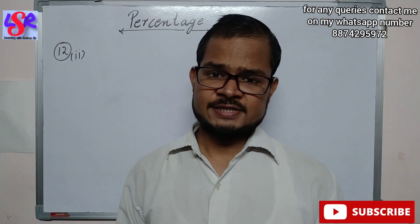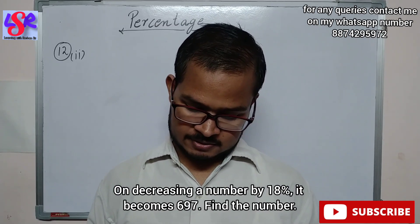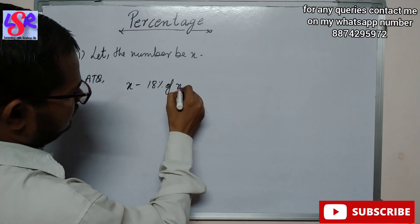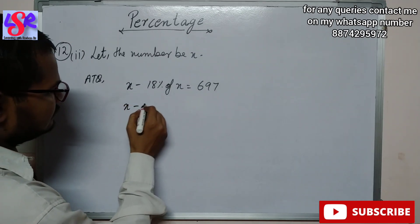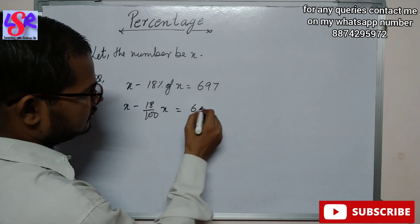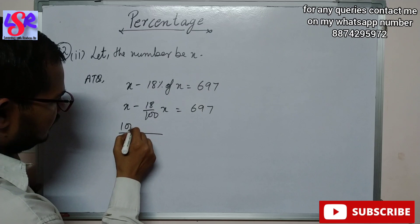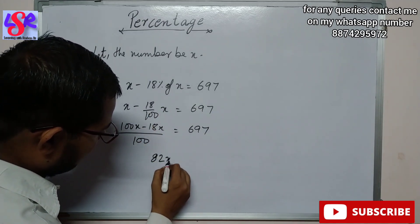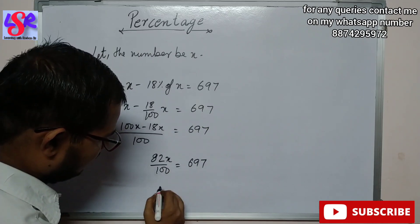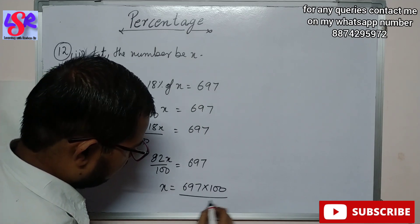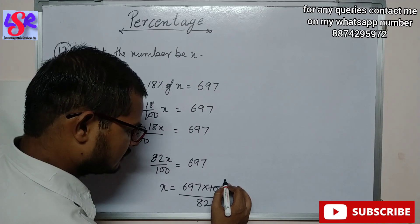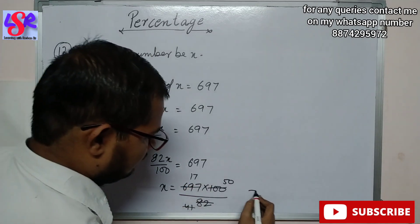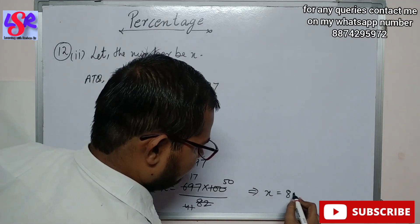Now we are moving to the second part of Question 12. Here, on decreasing a number by 18%, it becomes 697. Find the number. Let the number be x. According to the question, x minus 18% of x equals 697. This gives 100x minus 18x equals 697 into 100, so 82x upon 100 equals 697, meaning x equals 697 into 100 upon 82. Dividing by 2 gives 50 and 41. Then 697 divided by 41 is 17. So x equals 17 into 50, which is 850 as the required number.